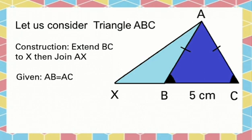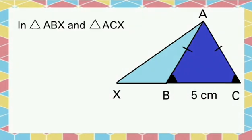It is given that AB equals AC. That means the triangle is isosceles. Now, let us consider triangles ABX and ACX.